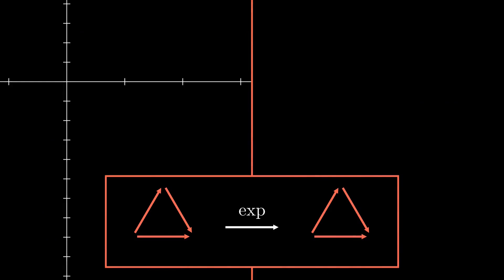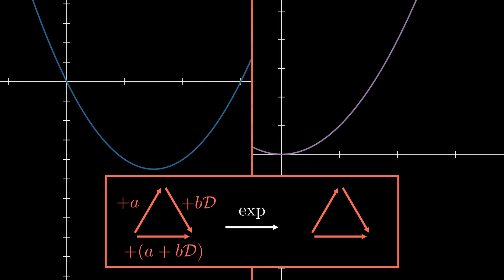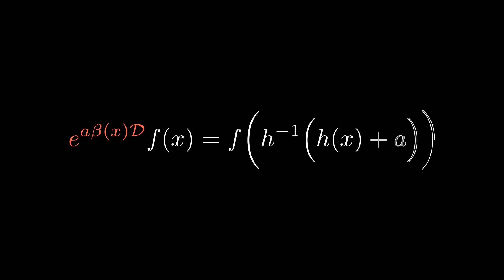If we exponentiate a plus bD, we get the composition of a scalar stretch and an orthogonal shifting action. This finds use in describing iterated functions, which we'll talk about in its own dedicated video.